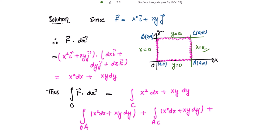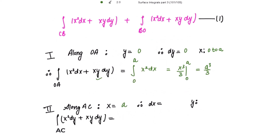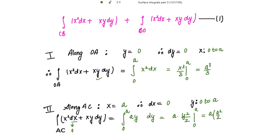Along AC, x=a, therefore dx=0 and y varies from 0 to a. The first term becomes 0. In the second term, putting x=a we get a·y dy, with limits from 0 to a. This equals a times y²/2 from 0 to a, giving a times a²/2, so the integral along AC is a³/2.